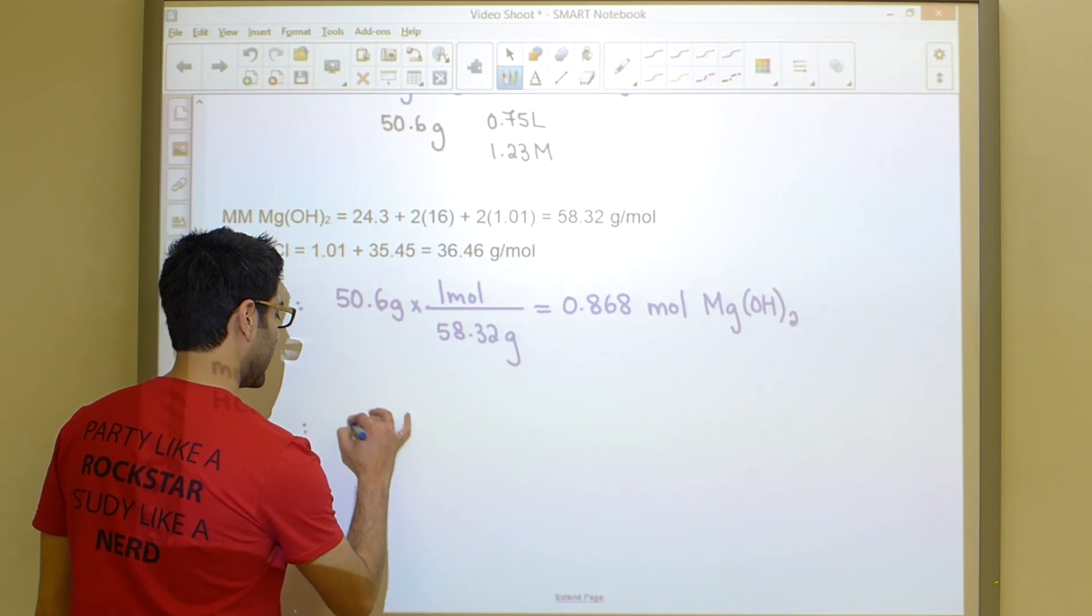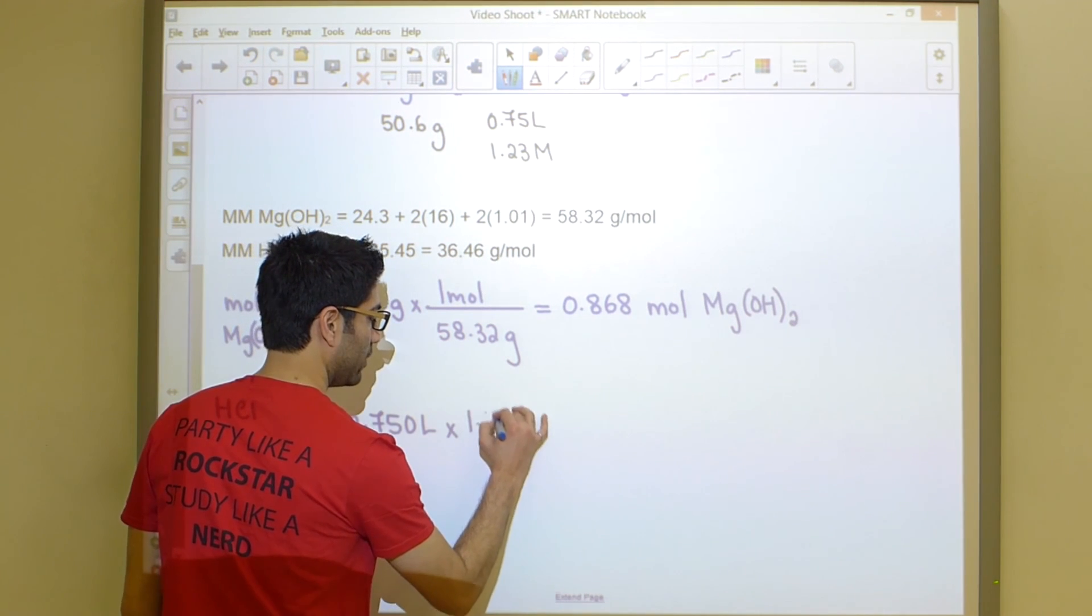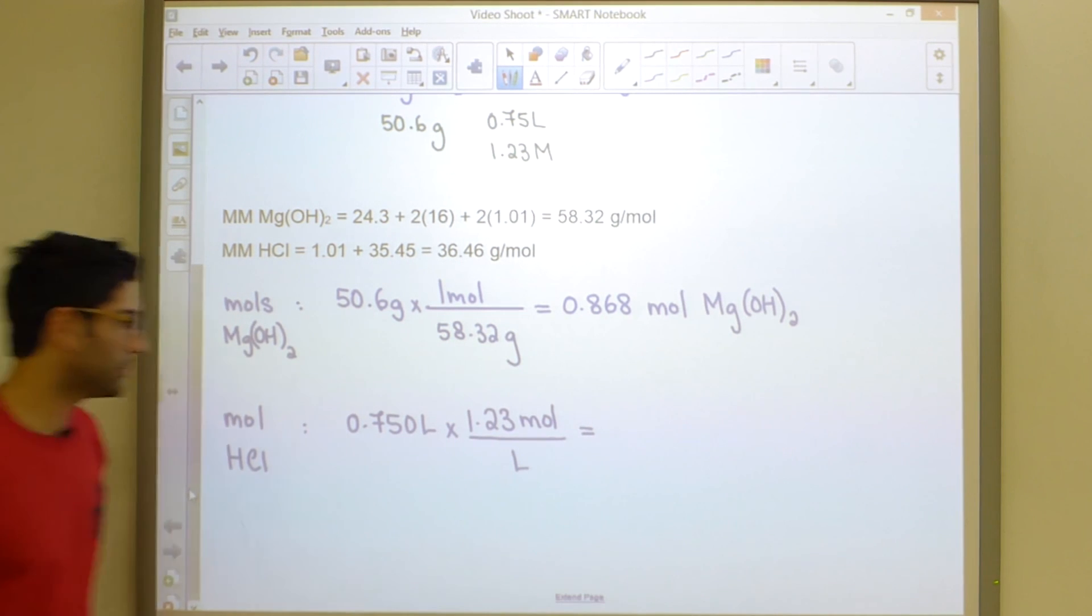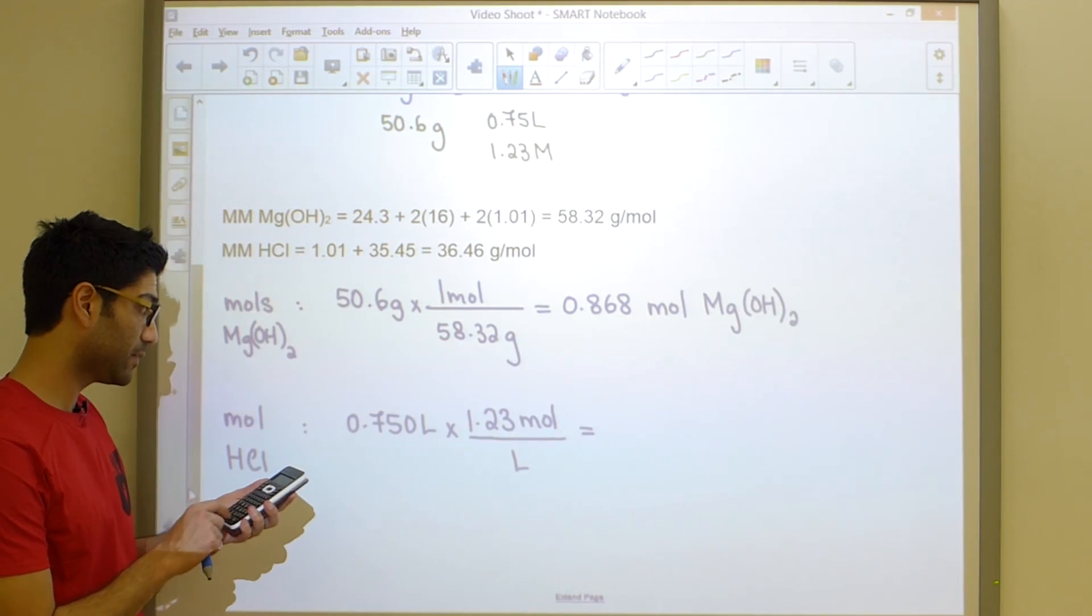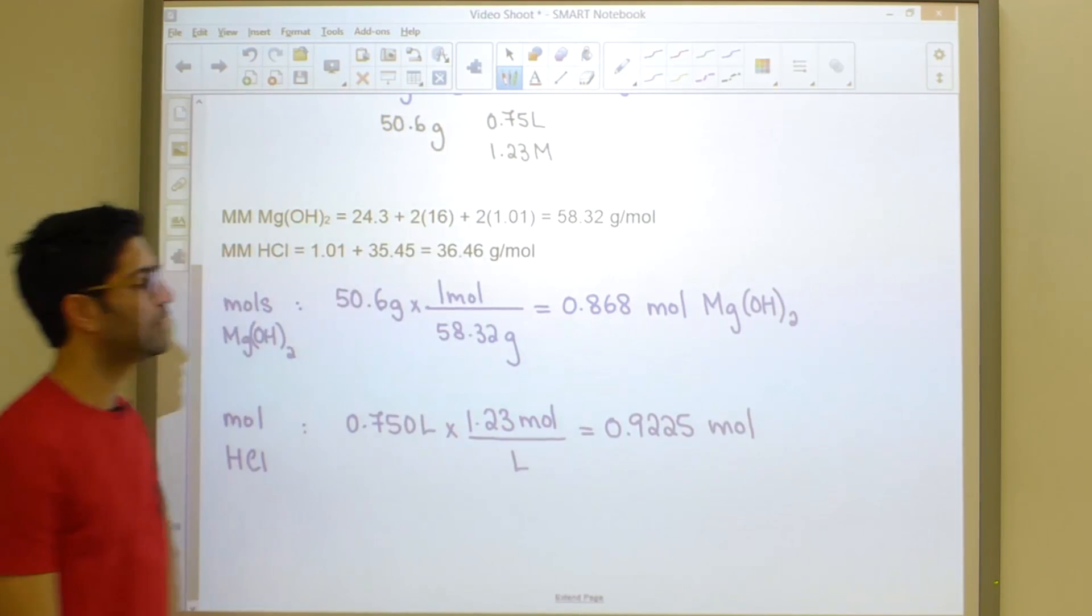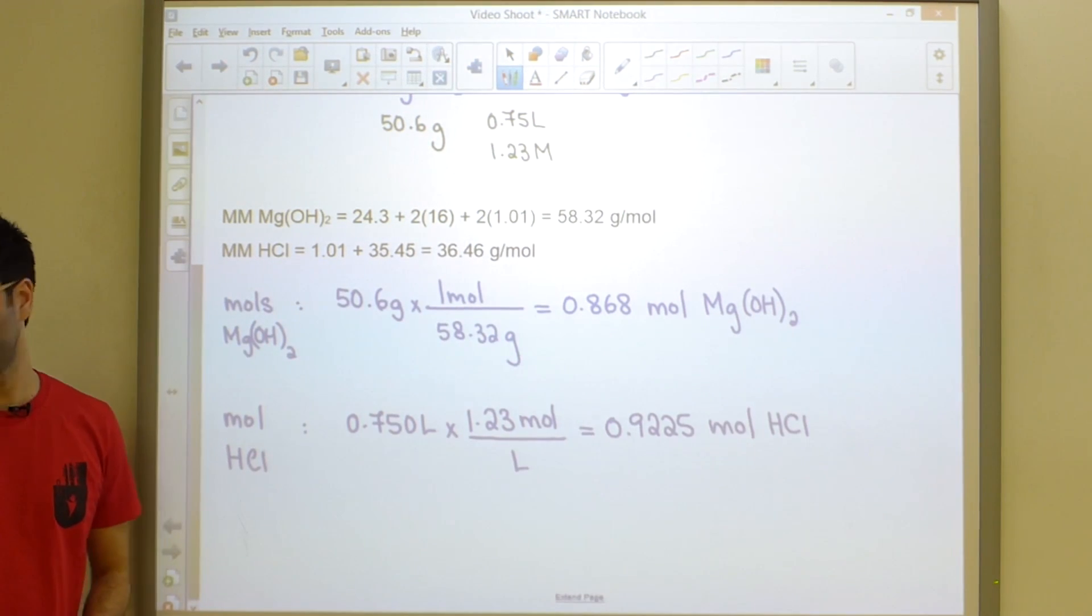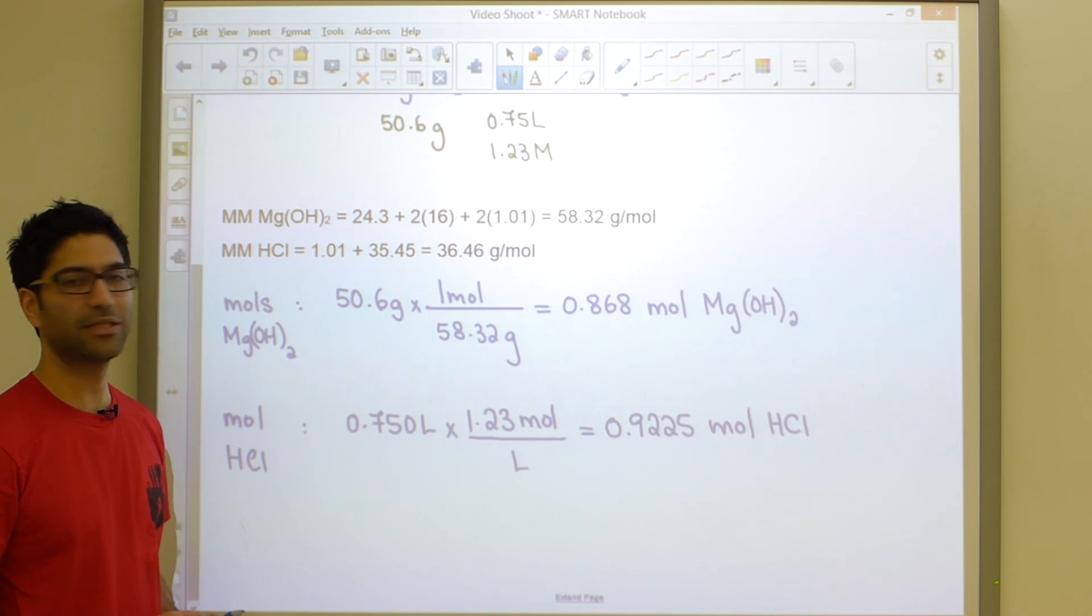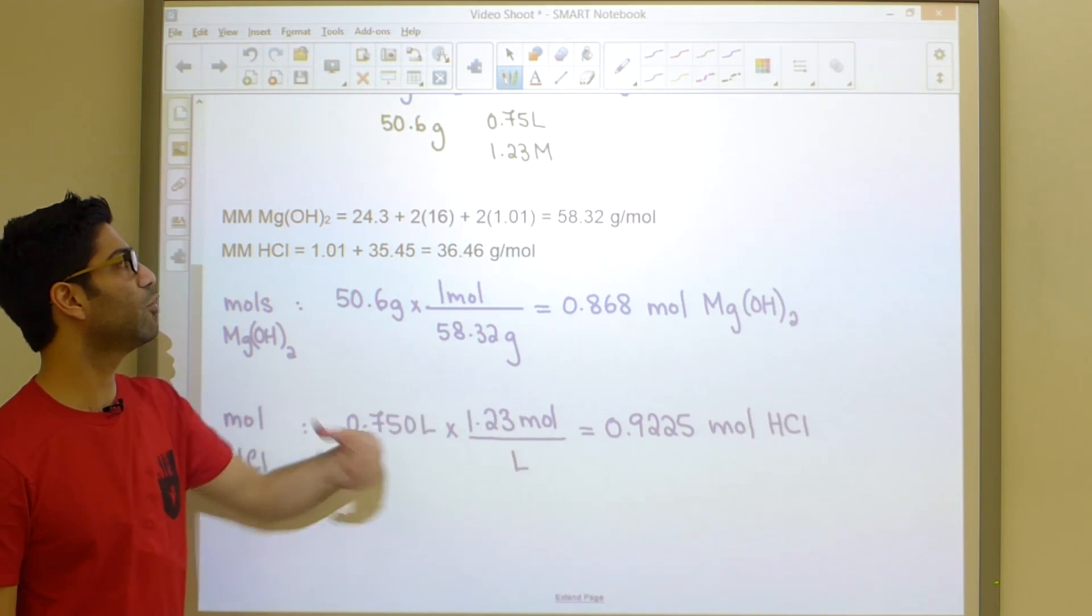Working this out is going to give us 0.9225 moles. Now that we've found the number of moles of each one of our reactants, we are in a position to figure out which one is limiting. You may have learned many different types of techniques to figure out which one is limiting. Here is perhaps the easiest one. All you need to do is divide each one of these two quantities by their stoichiometric coefficients.